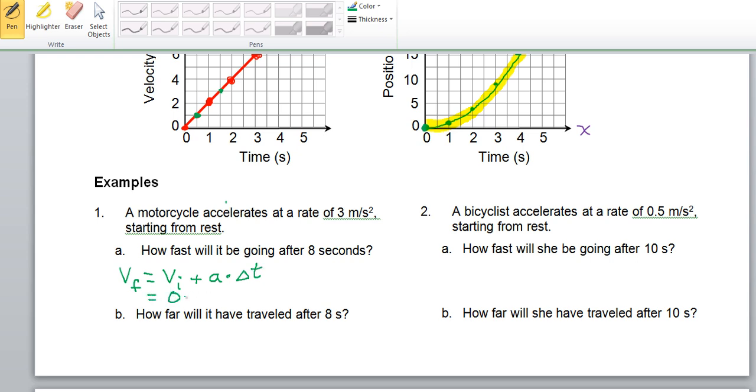So, the initial velocity is zero meters per second plus rate of acceleration of three meters per second squared times eight seconds. So, we get, for a result, 24 meters per second.